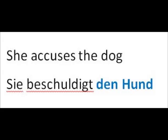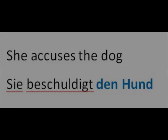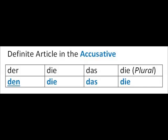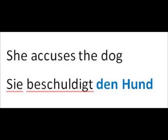The dog is the direct object. In German, 'der' has changed to 'den' to indicate the accusative: 'sie beschuldigt den Hund.' Only the definite article 'der' changes in the accusative. We now know the definite article of the accusative for all genders and the plural.